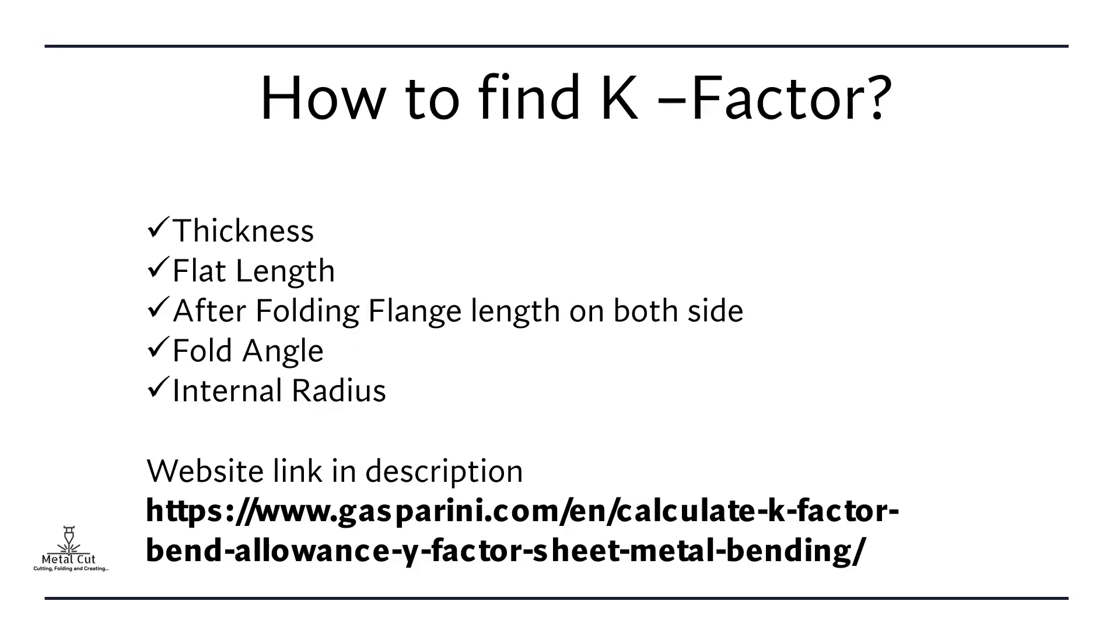Now how do we find this K factor and how do we get it right all the time? So it mainly depends on thickness, flat length when you fold it before and after fold length, so after folding we get both directions. What would the land from side, then fold angle and internal radius? If we have all this information, we can easily put all this data in...